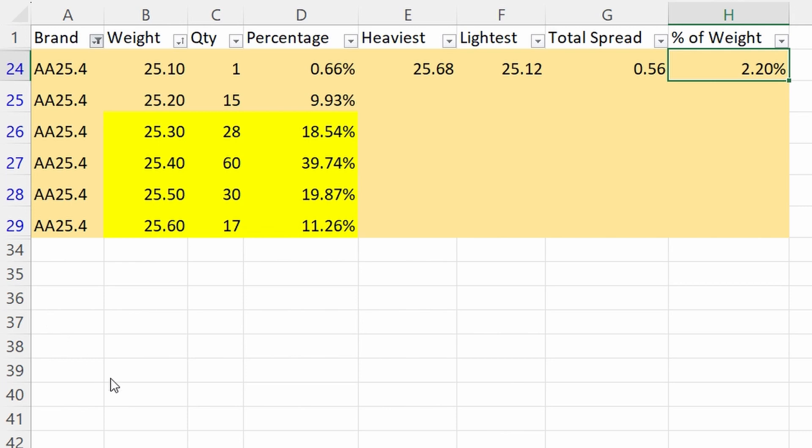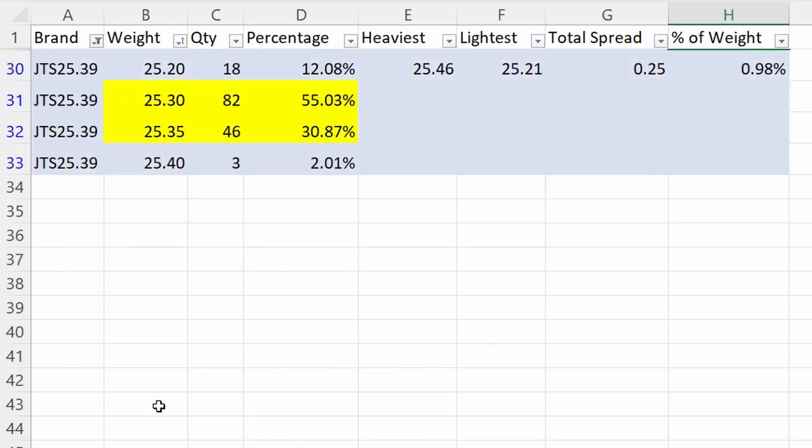Last one is the JTS, and you probably already figured out that it had the best spread. If you watched the video, that was the only container that had the small container. It had the best spread by quite a large margin. Heaviest pellet was 25.46, the lightest pellet was 25.21. Total spread was only a quarter of a grain, 0.25, which gives us a 1% total variability in weight. That is super tight.